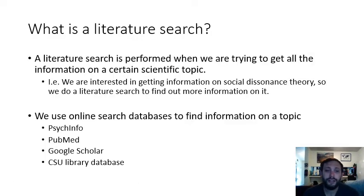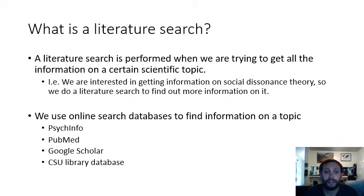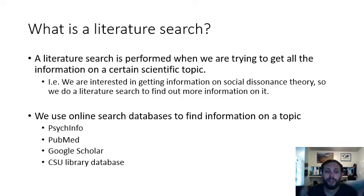So what is a literature search? A literature search is performed when we're trying to get all the information on a certain scientific topic. In this class, your scientific topic is the one assigned to you — either cognitive dissonance theory, social identity theory, social comparison theory, and so on. We do a literature search to find primary sources, like scientific journals or chapters in books, by going through certain online databases.